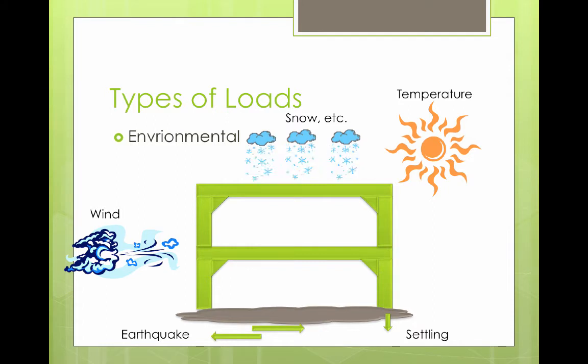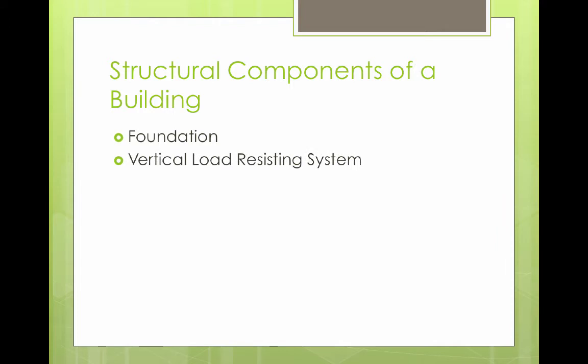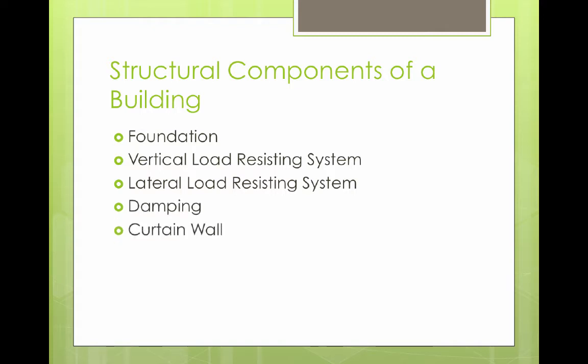Environmental loads even include temperature changes, which can cause loads due to thermal expansion of building materials. For the purposes of this class, we will put the structural components of a building into the following categories: foundation, vertical load resisting system, lateral load resisting system, damping, and the curtain wall.